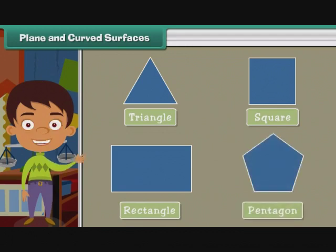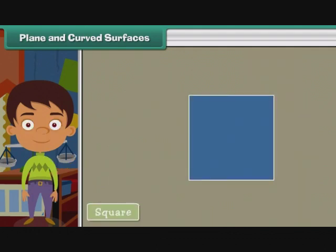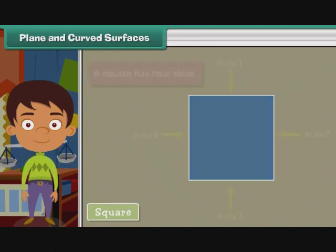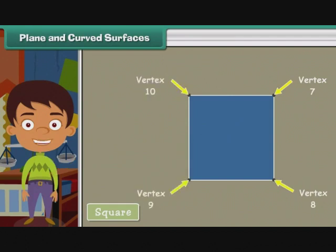Now we'll study about plane figure sides and vertices. Look at this square. Arrows one, two, three, four indicate the sides of a square. A square has four sides. The point at which two sides meet is called a vertex. Arrows six, seven, eight, nine indicate the vertices of a square. So here we see square has four vertices.